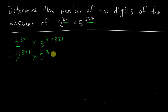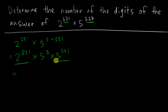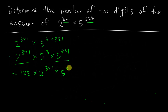So the expression becomes: 5 to the power of 3, multiplied by 2 to the power of 321, multiplied by 5 to the power of 321. Rearranging: 5 to the power of 3 is 125, multiplied by 2 to the power of 321, multiplied by 5 to the power of 321. Since these last two have the same power, we can combine them to get 125 multiplied by 10 to the power of 321.